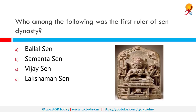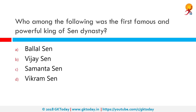Who among the following was the first ruler of the Sen dynasty? The Sen Empire was a Hindu dynasty during the late classical period that ruled from Bengal through the 11th and 12th centuries. The rulers of the Sen dynasty traced their origin to the south Indian region of Karnataka. Their first ruler was Samanta Sen. After him came Hemanta Sen, who usurped power and styled himself king in 1095 AD.